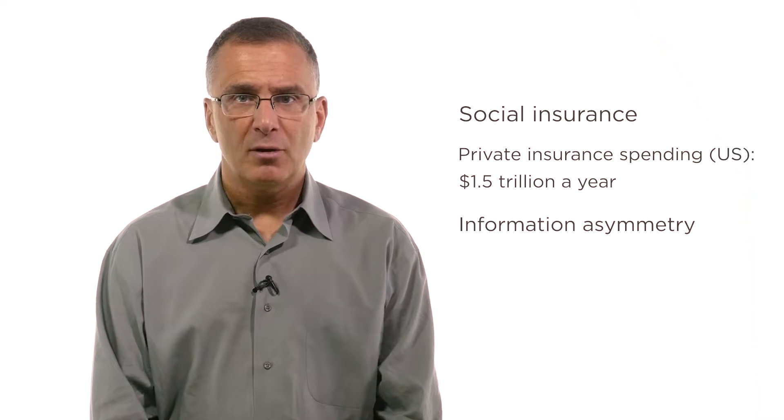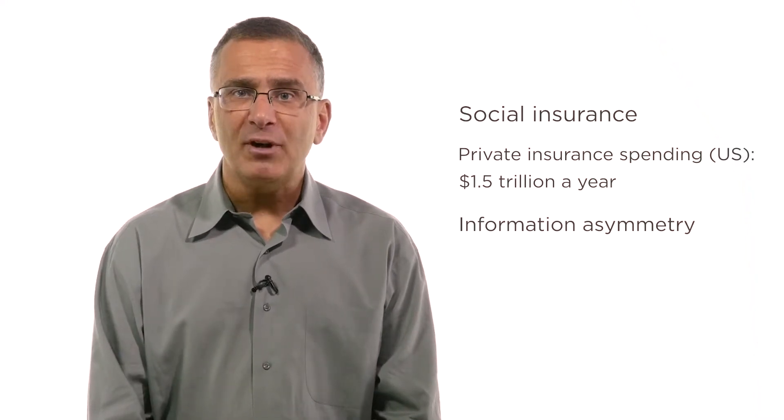The reason for this underinsurance on the part of private insurers is a type of market failure known as information asymmetry, whereby the information available to the sellers in a market is different than that available to the purchasers. If this is the case, it can lead to transactions that would make both parties better off not happening.